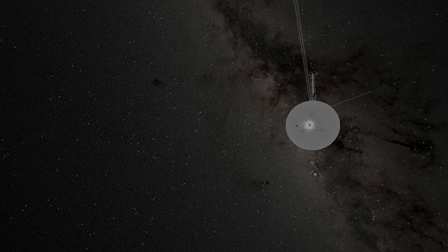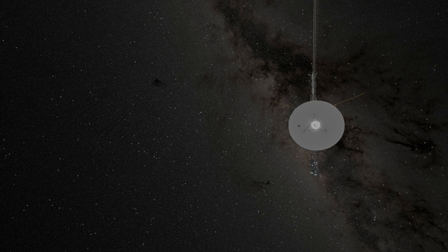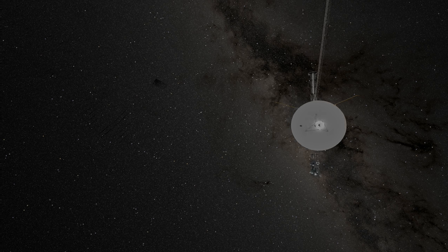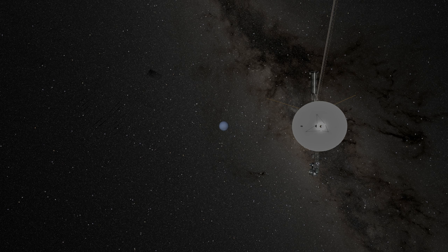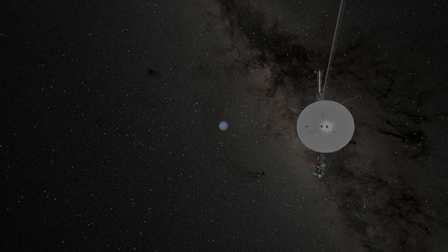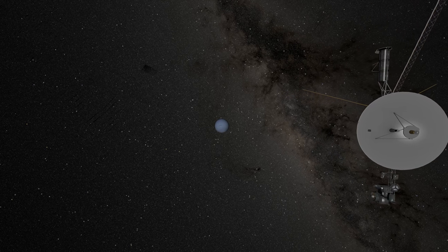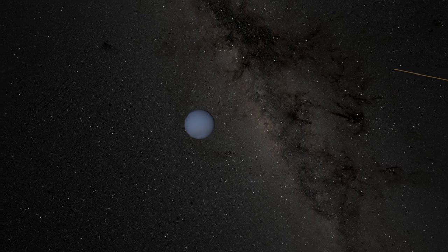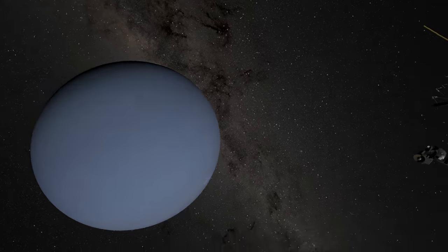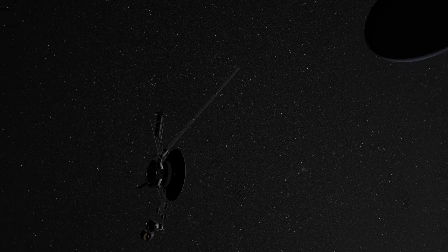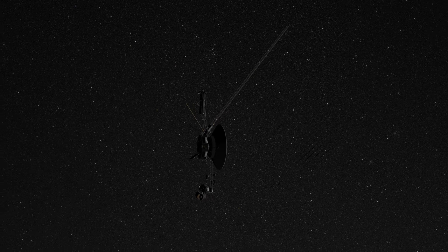In August 1989, Voyager 2 encountered the 8th and farthest known planet of the solar system, Neptune. At a distance of 4.5 billion kilometers from the Sun, that's 30 times further away than Earth. Sunlight is about 4 hours and 8 minutes old by the time it reaches Neptune.